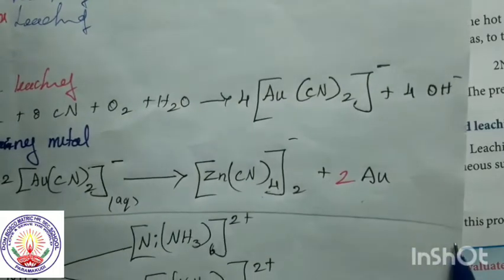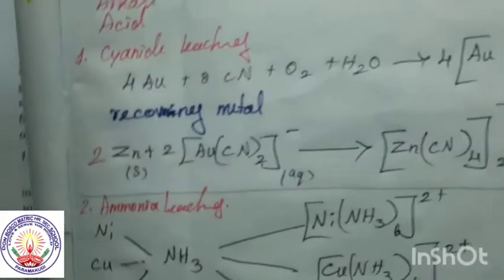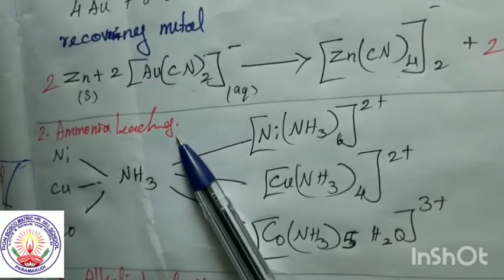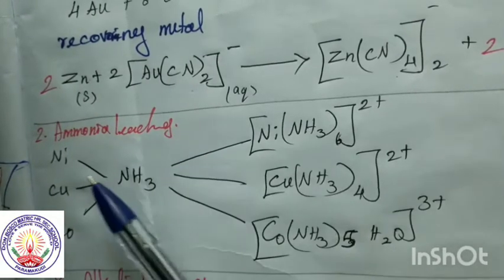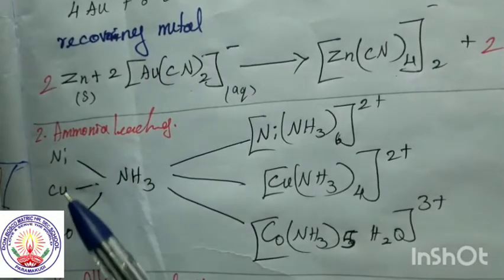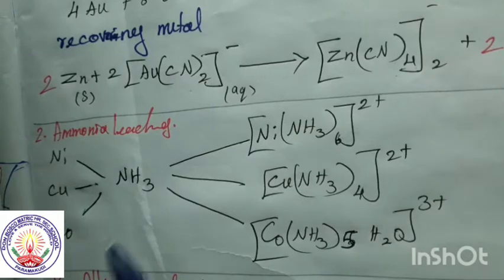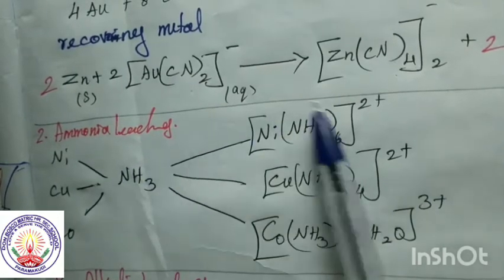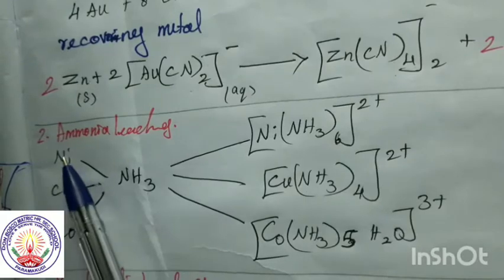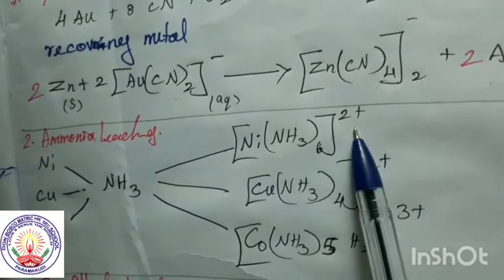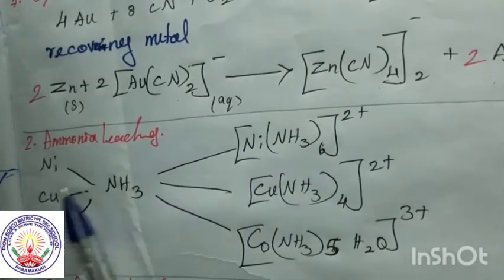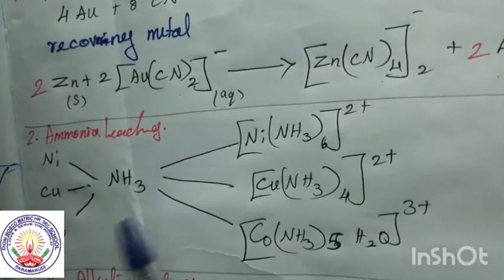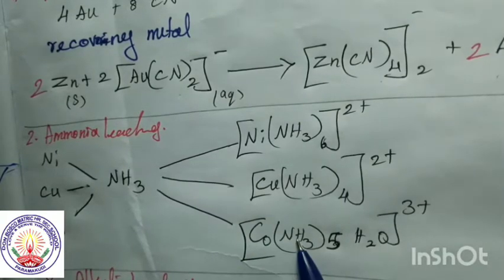The next method is ammonia leaching. In ammonia leaching, copper, nickel, and cobalt are treated with ammonia to get their complexes. When we treat nickel with ammonia, we get nickel complex; copper with ammonia gives copper complex; cobalt with ammonia gives cobalt complex.